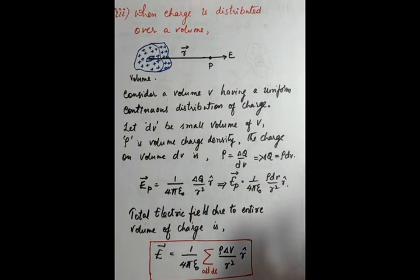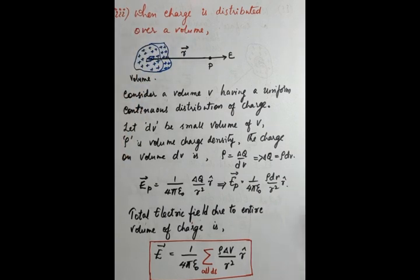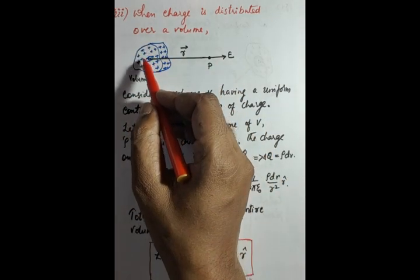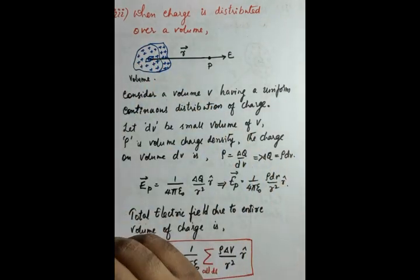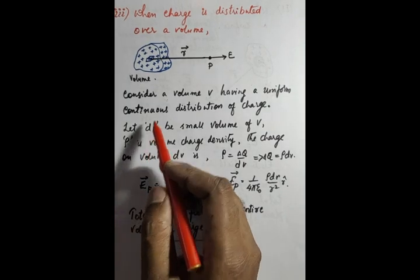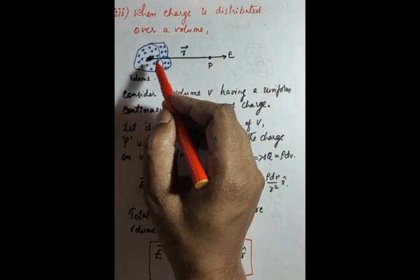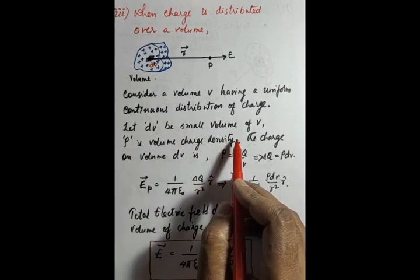When the charge is distributed over a volume, the same procedure applies — a very simple concept. We consider a volume V with charge uniformly distributed throughout. We take a small volume element dv, where rho (ρ) is the volume charge density — that is, the charge per unit volume.